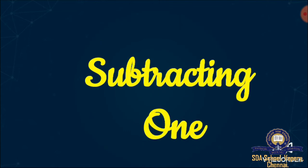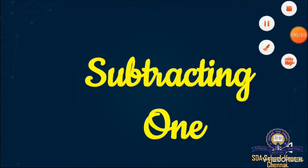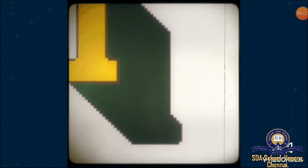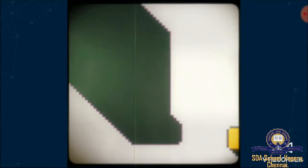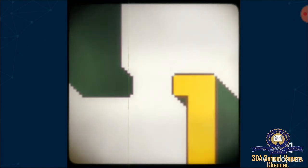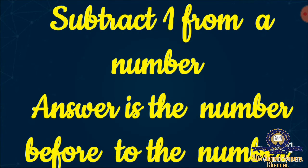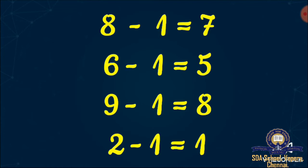The next unit is subtracting one. If you have a number and you subtract it with one, what will be the answer? The answer will be the before number — the number that comes before it. Subtract one from a number, the answer is the number before it. For example: eight minus one — what is the before number of eight? That is seven. So seven will be your answer.